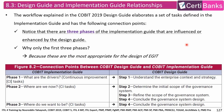The third topic is the Design Guide and Implementation Guide relationships. There are relationships between the first three phases of the Implementation Guide and the COBIT Design Guide phases. Phase one of the implementation — what are the drivers? — is related to step one in the Design Guide: understand the enterprise context and strategy. Phase two of the implementation — where are we now? — is related to the last three steps in the Design Guide: determine the initial scope of the governance system, refine the scope of the governance system, and conclude the governance system design.